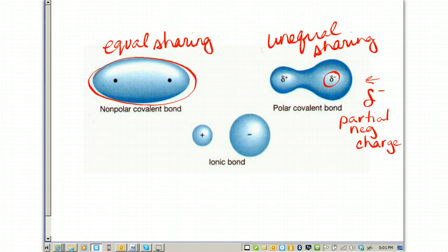On the opposite side of that, we have the delta with the plus, and that means partial positive charge. So the sharing of electrons is more toward the more electronegative element, leaving the other element to be slightly positive. Finally, recall that an ionic bond is where there's a transfer of electrons from one atom to another, so there's no sharing going on in between them.